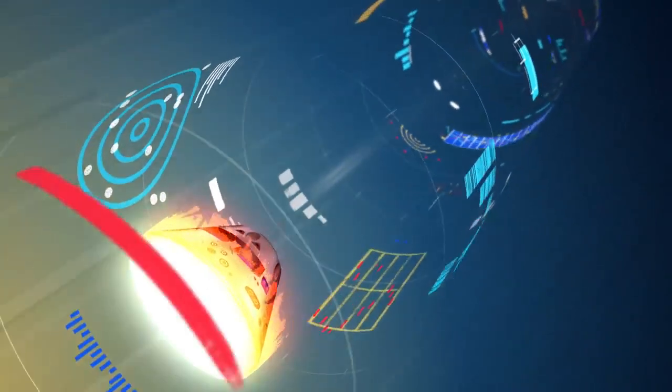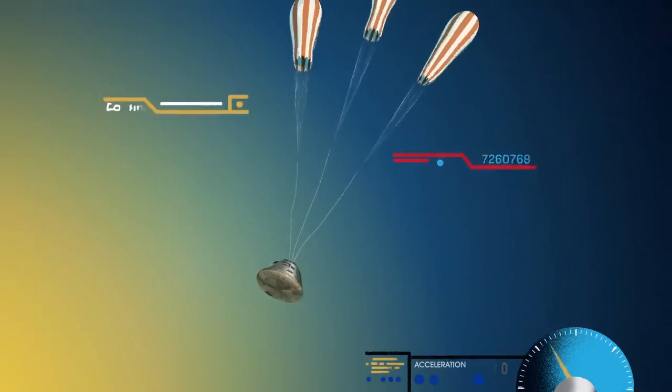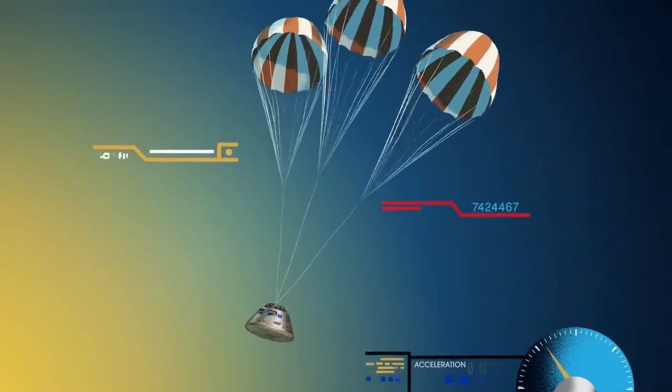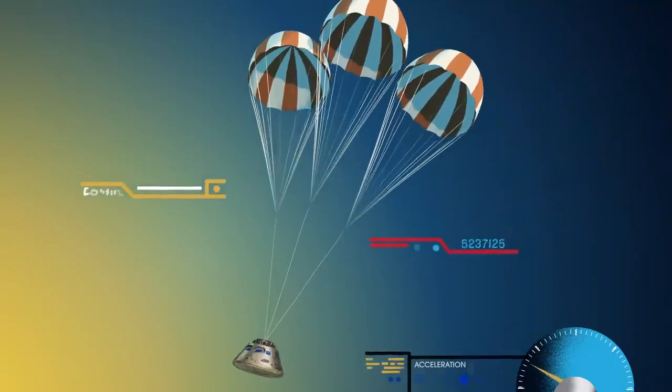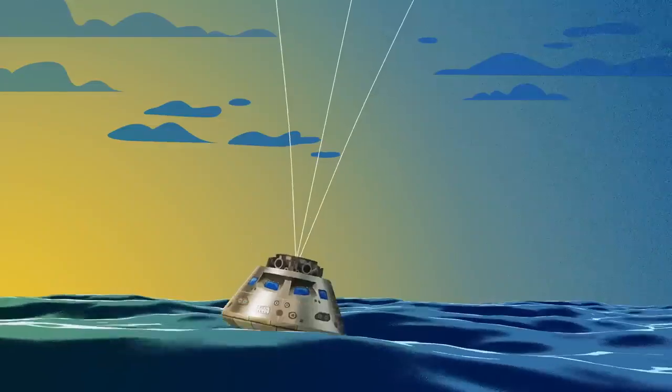With the Orion now at just 300 miles per hour, a series of parachutes uniquely tested and produced for this moment deploy, decelerating the craft to just 20 miles per hour for splashdown.